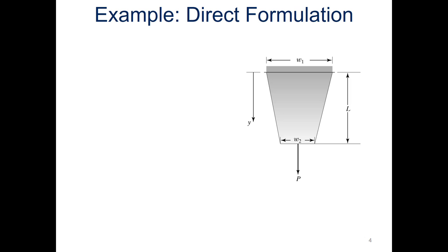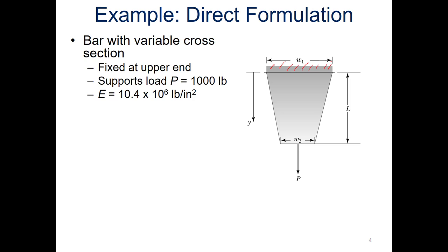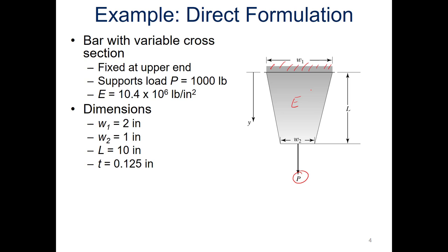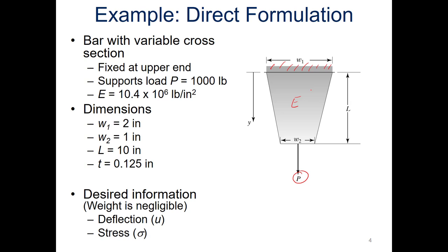So for direct formulation, we're going to go through this example of a bar. This bar has a variable cross-section and is attached at the wall — fixed at the upper end. It supports a load P of 1,000 pounds at the bottom, and we have a modulus of elasticity given at 10.4 times 10 to the sixth. All dimensions are given, which we'll substitute in later. What we're trying to find, ignoring the weight of the bar, is the deflection U and the stress occurring within the bar.